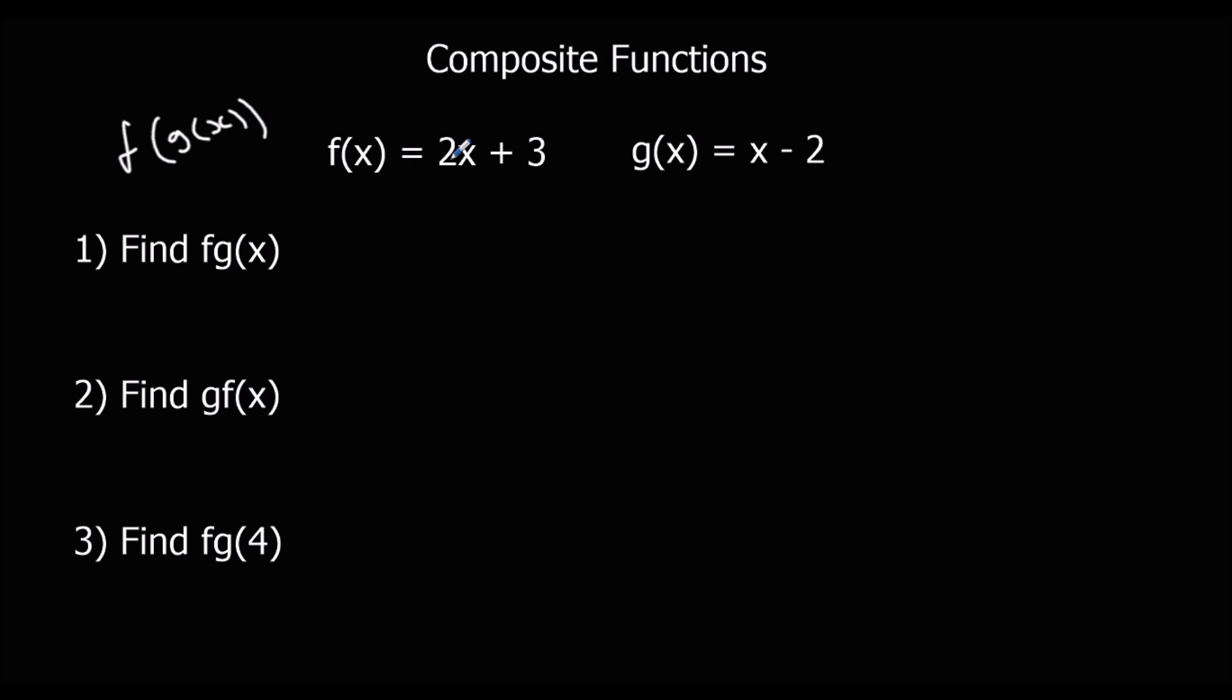So the input, what you put in here for x, is going to be this whole function. The input is going to be x minus 2. So f g x, if we put g into f, that means we've got 2, and then we put g in there, so x minus 2 plus 3.